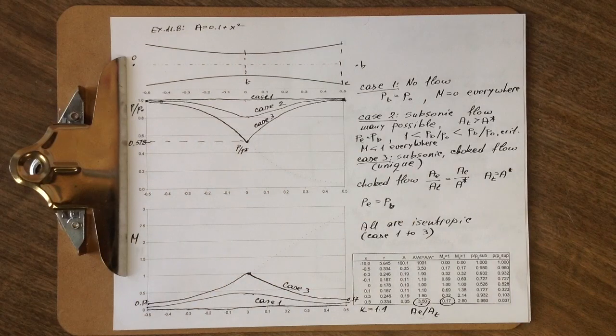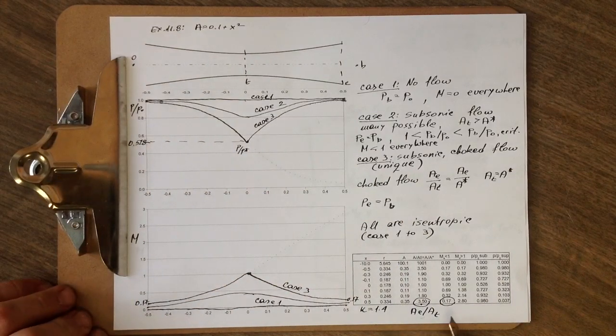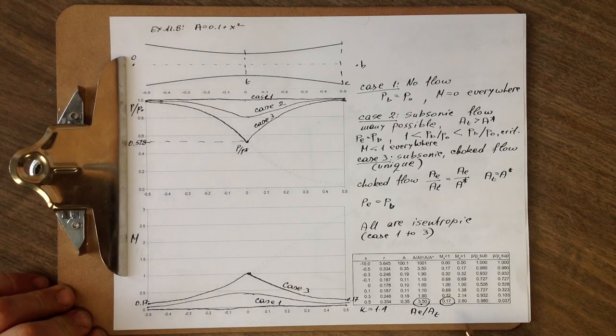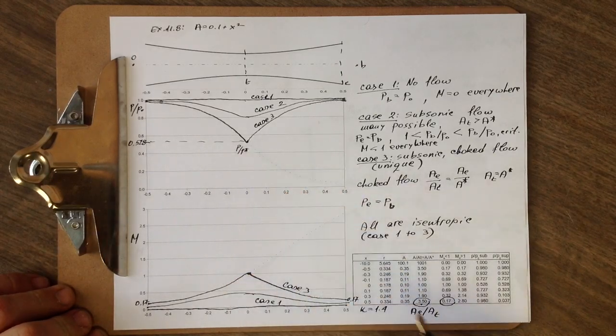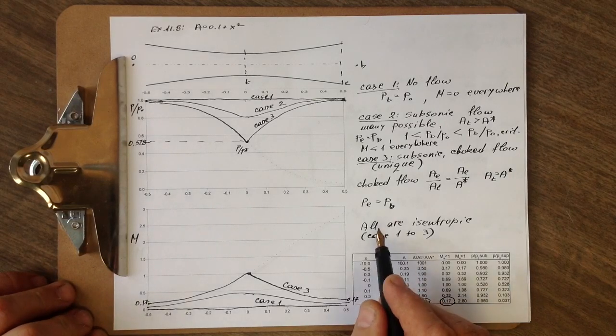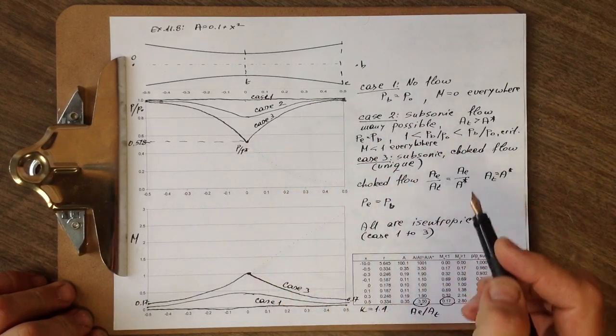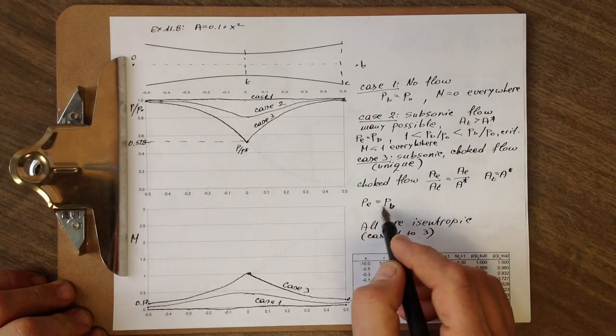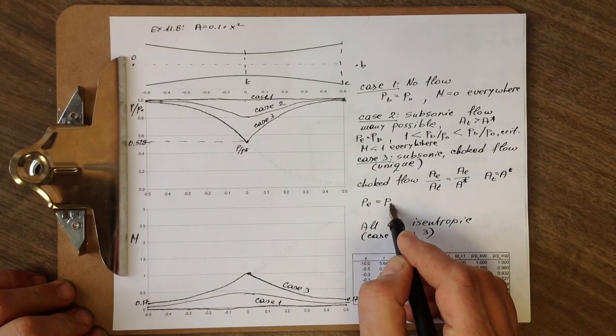And given that this is subsonic flow at the exit, we still have exit pressure equal to the back pressure. So all these three cases are isentropic.